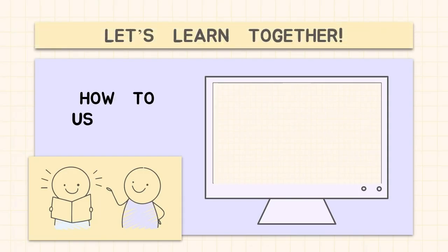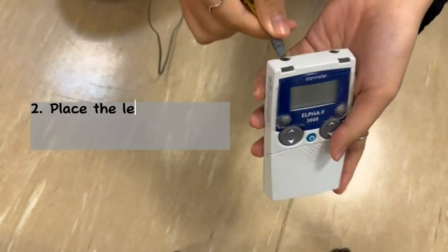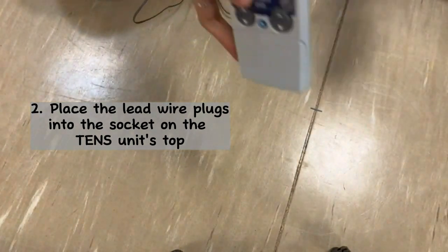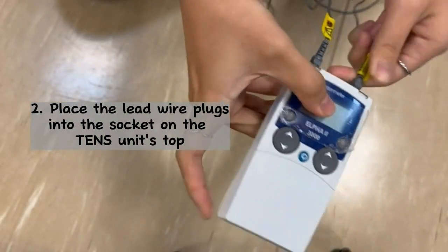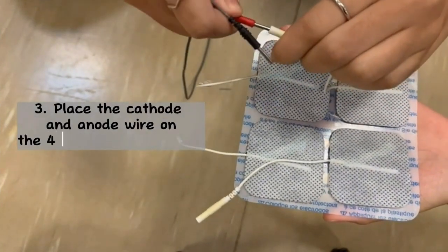Let's learn together on how to use TENS. First, make sure the TENS machine is turned off. Second, place the lead wire plugs into the socket on the TENS unit top. Third, place the cathode and anode wire on the four electrode pads wire.